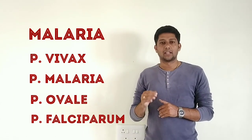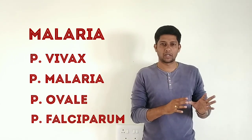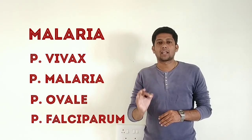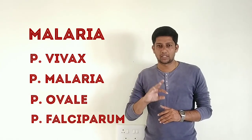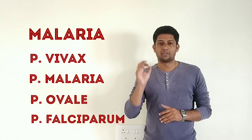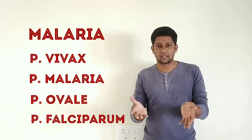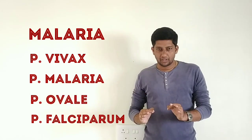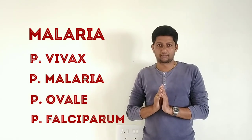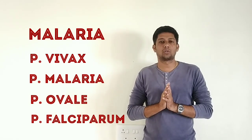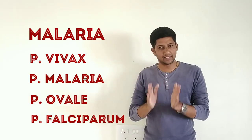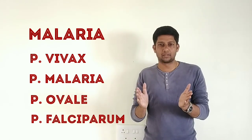This protozoan is transferred from an infected person to a normal person through the vector — the female Anopheles mosquito — who transfers this malarial protozoan. You may ask why the female: the reason is that the female Anopheles mosquito feeds on human blood, while the male Anopheles mosquito feeds on plant sap.